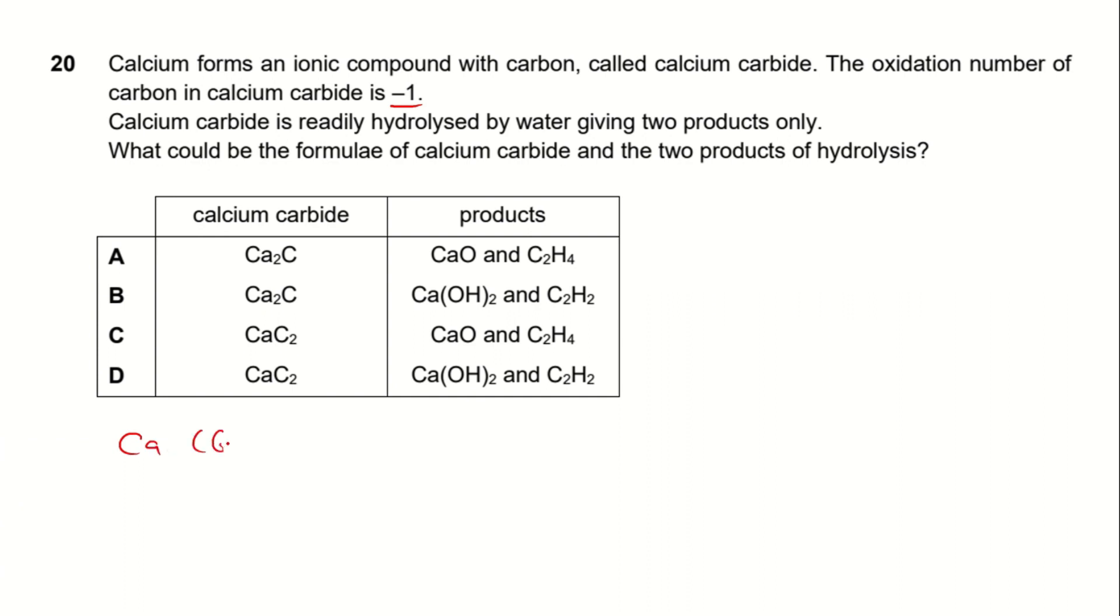Calcium is a group 2 metal. So it always loses 2 electrons to form a calcium 2 positive ion. Carbon in the carbide has a negative 1 oxidation number.